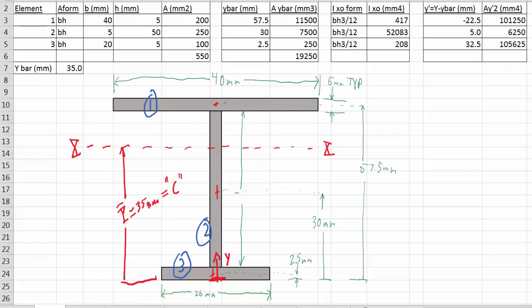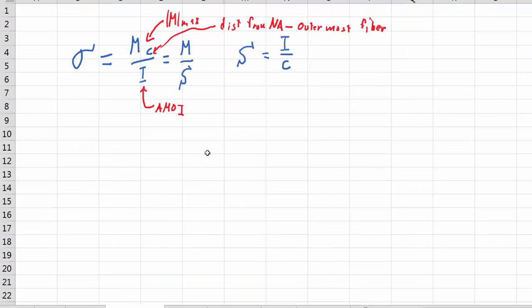So we'll go back over here to stress analysis, and we'll look at this one, M over S. Well, S is really good to be using if you have standard shapes, such as S shapes, or W shapes, or I beams, or C channels, or 2x4s, that kind of stuff where it's pretty standard what people use in industry.